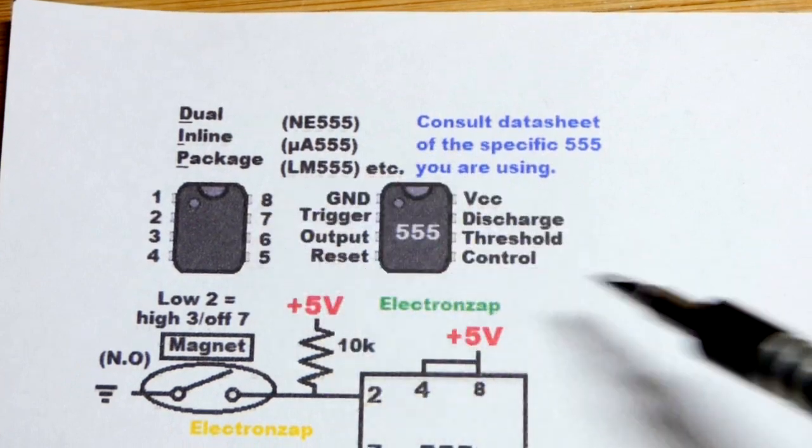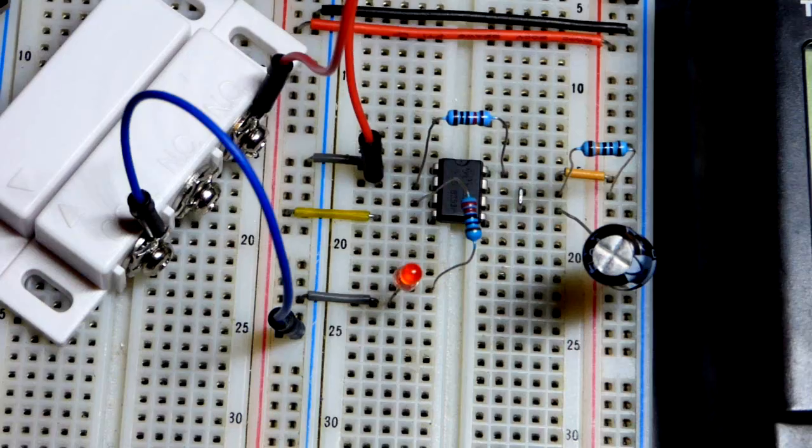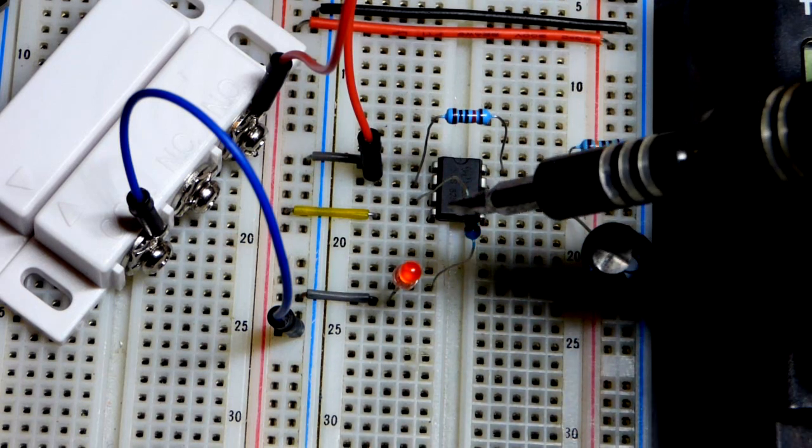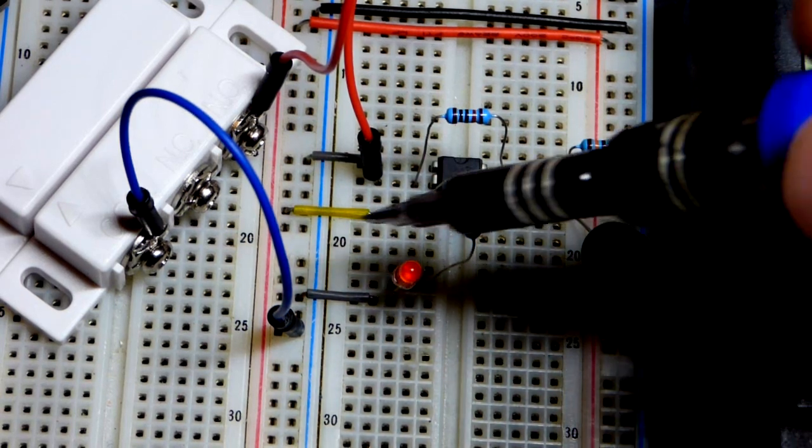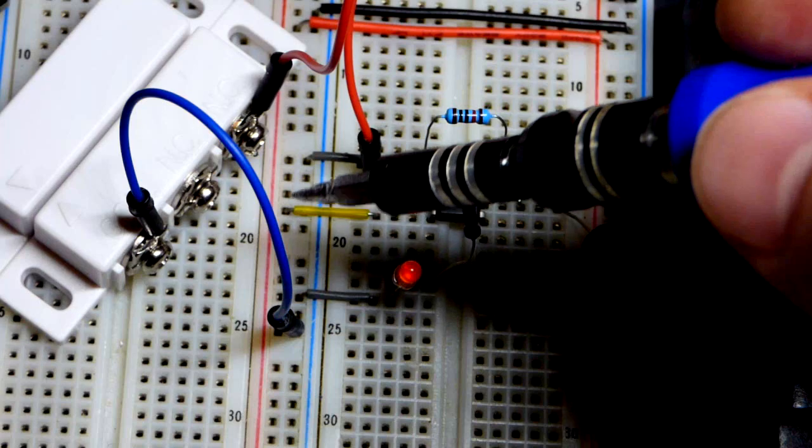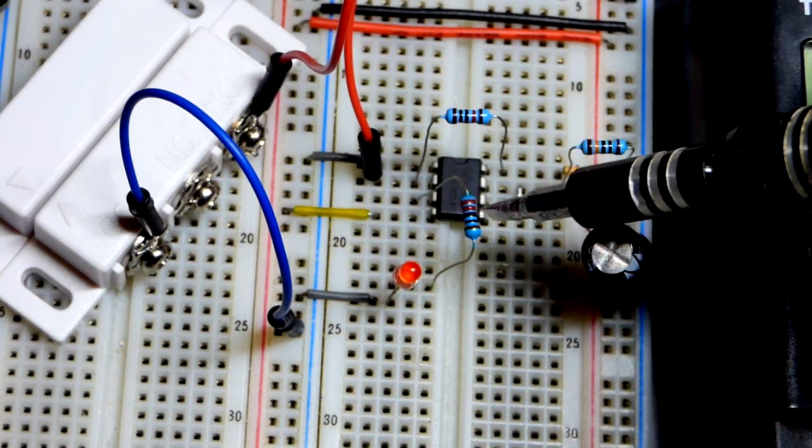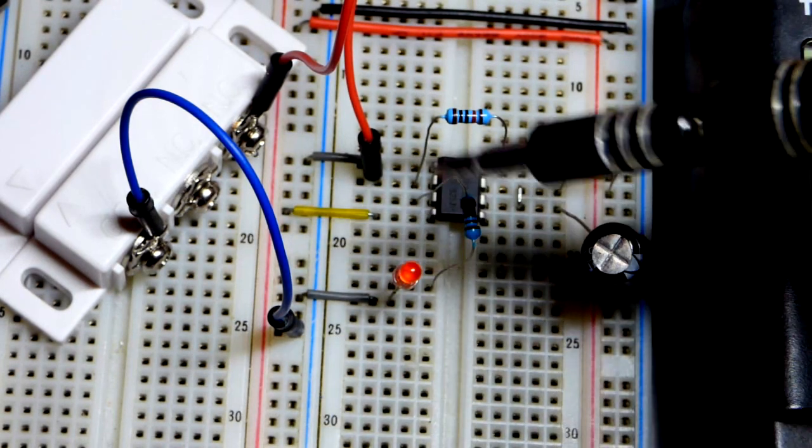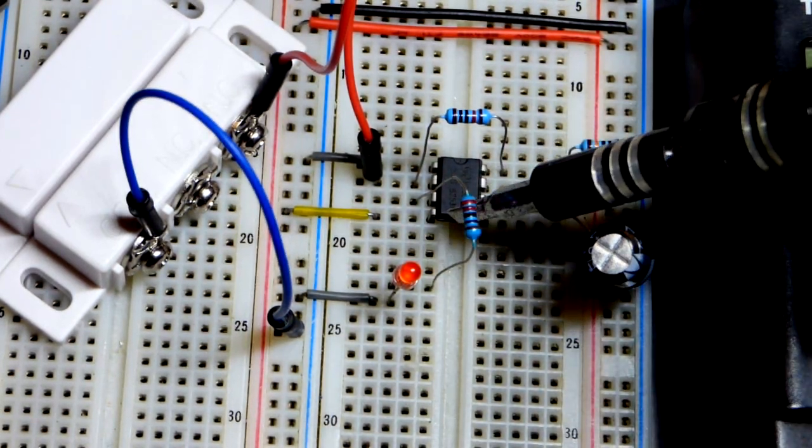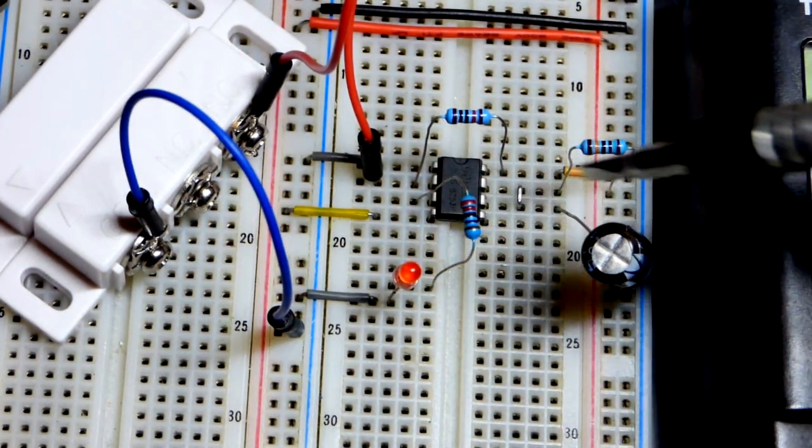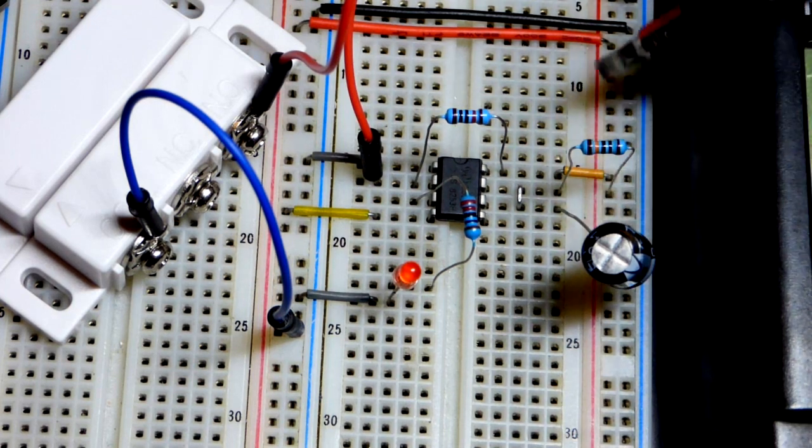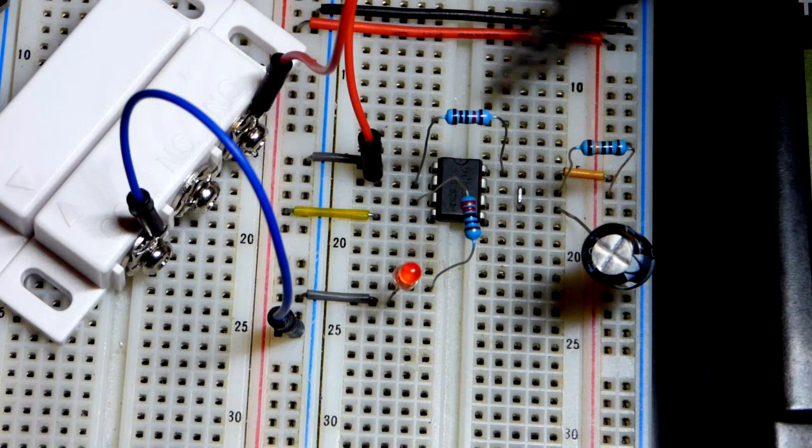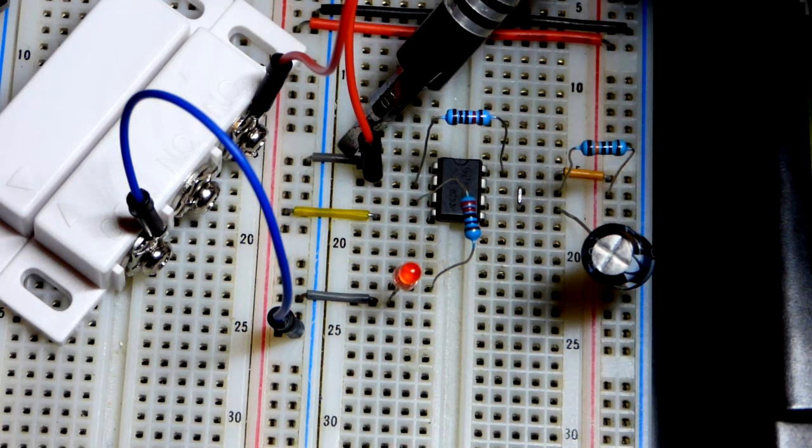Here we are on the breadboard. I forgot to mention, but hopefully you saw it on the schematic - pin number four is directly to the positive supply. It's waiting for a low input as well, we don't want it to do anything, so we keep it high, five volts. We're keeping it off for this video. We power the integrated circuit with pin number eight, positive supply, pin number one to the negative supply.